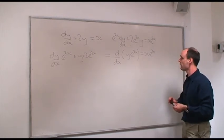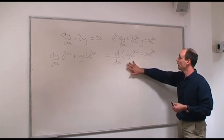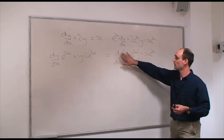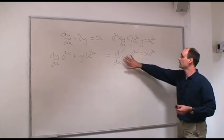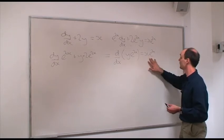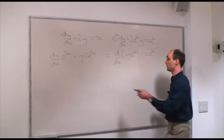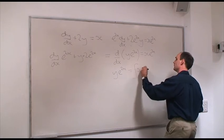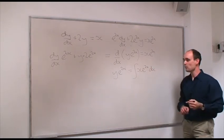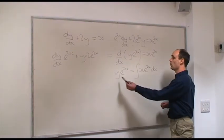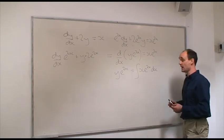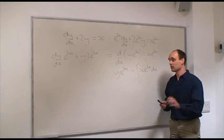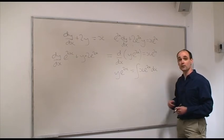What this has done for us is we can now integrate through this differential equation with respect to x. On the left-hand side we have d/dx of something equal to something else, so we can integrate both sides. Integrating the left-hand side gives y·e^(2x). Then we integrate the right-hand side: the integral of x·e^(2x) dx. We can see we're nearly there — our differential equation is now in the form y·e^(2x) = ∫x·e^(2x) dx, and this integral on the right-hand side can be done using integration by parts.